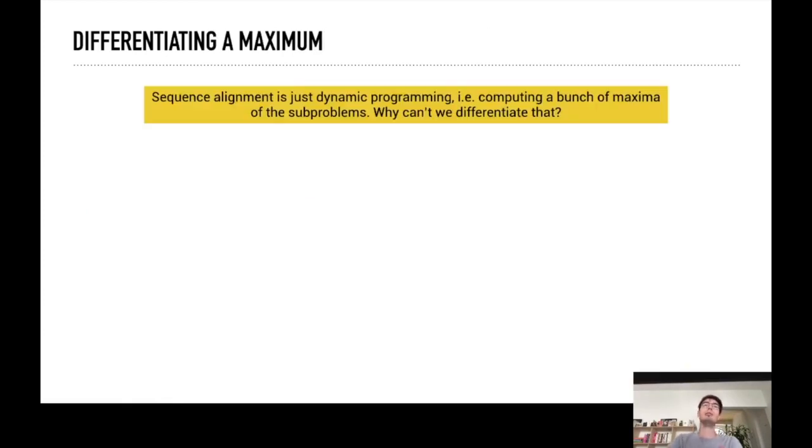Now you might wonder, okay, sequence alignment is just dynamic programming, iteratively applying the maximum, why can you not differentiate this automatically? Well there is a little bit of a problem here.